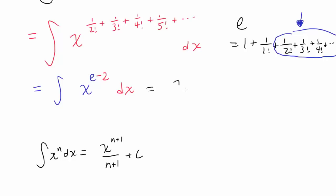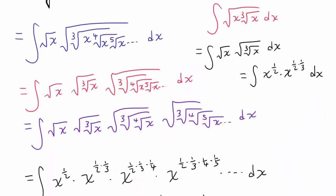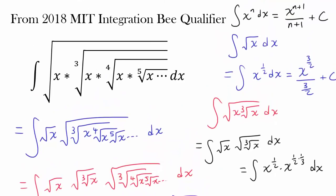We simply add 1 to e minus 2 to get e minus 1, divide by the same thing, and put plus c. So the answer to this pretty crazy question — with square root, cube root, fourth root, and so on — is x to the e minus 1 over e minus 1 plus c.